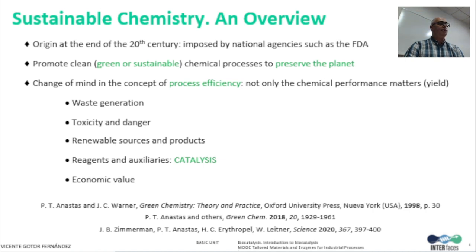Thus, two principles were enunciated defining the characteristics of a green process, which are briefly summarized as the reduction of waste generation, avoidance of using dangerous materials or producing toxic products, taking advantage of natural renewable sources, developing catalytic transformations, and focusing on economic aspects as well as sustainability.